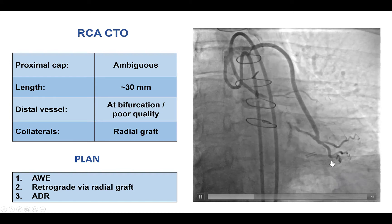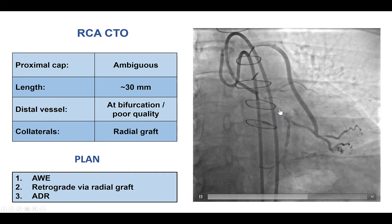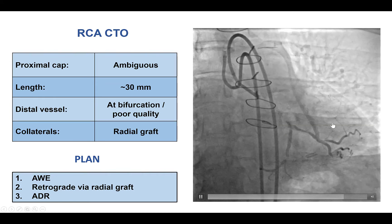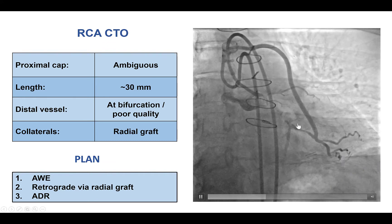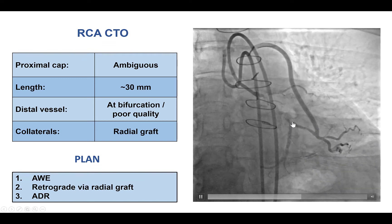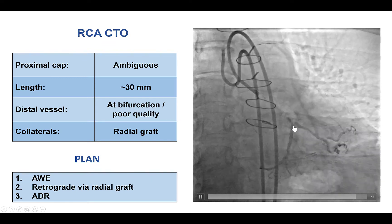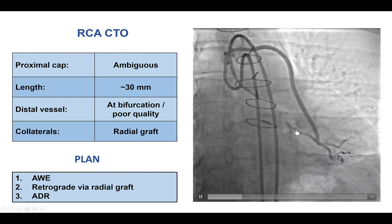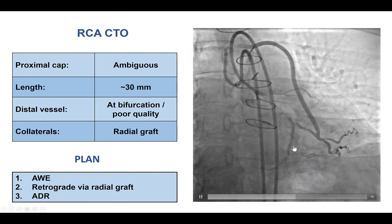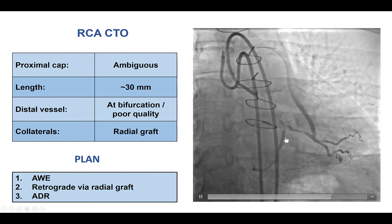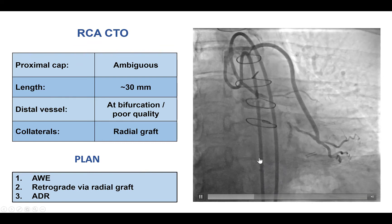This is the dual injection demonstrating the anatomy. There is an ostial circumflex CTO. The obtuse marginal is filling through the radial graft. However, there is a severe lesion in the radial graft proximal to the origin of the obtuse marginal branch. Therefore, there is ischemia on the inferior lateral wall, given that this was a left-dominant system.